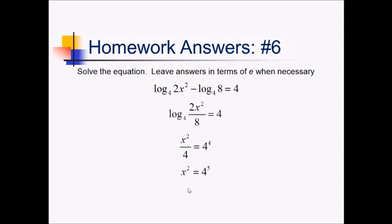So I'm going to rewrite this as plus or minus the square root of 4 to the 5th power. Now, the square root of 4 we know is 2. 2 to the 5th is 32, so this is plus or minus 32.